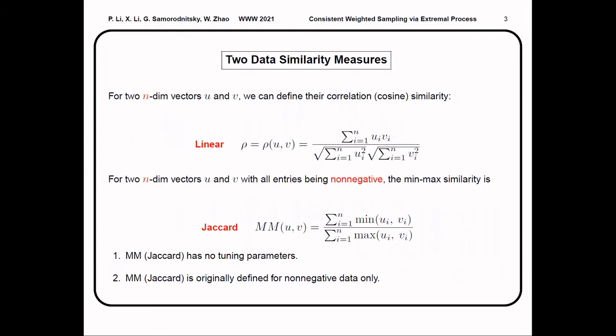For two data vectors u and v, we can define their correlation as rho here. And if these two data vectors are non-negative, we can define the min-max similarity or the Jaccard similarity as the sum of the dimension-wise minimum over the sum of the dimension-wise maximum. The Jaccard has no tuning parameter and it is originally defined only for non-negative data.